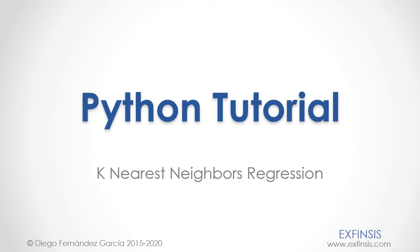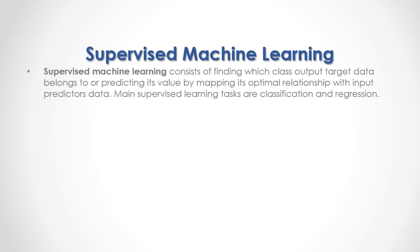Python Tutorial: K-Nearest Neighbors Regression. Supervised machine learning consists of finding which class output target data belongs to, or predicting its value by mapping its optimal relationship with input predictor's data. The main supervised learning tasks are classification and regression.